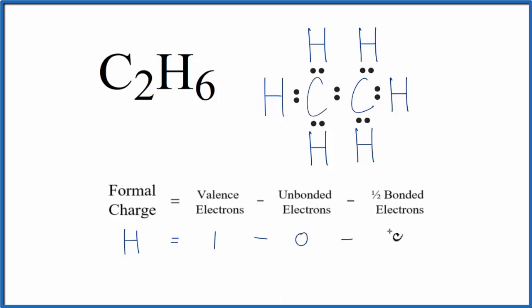From that, we'll subtract one-half of the bonded valence electrons, these two right here. So 2 over 2. 1 minus 0 minus 1, that equals 0. So the formal charge on this hydrogen is 0.